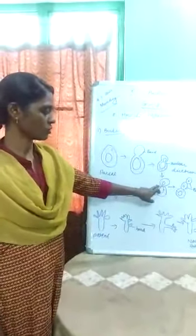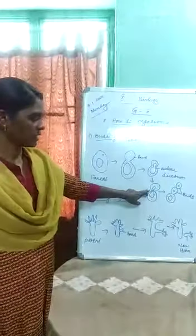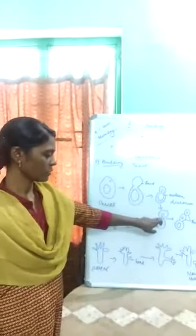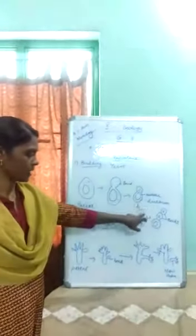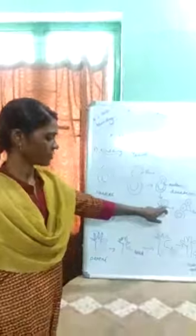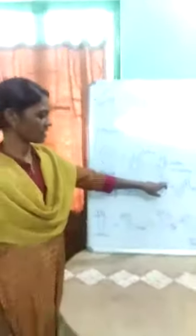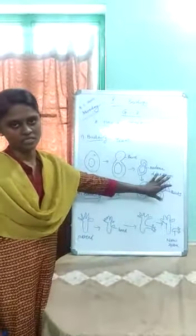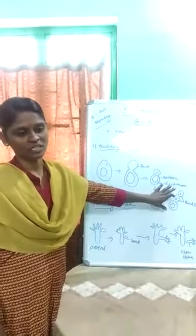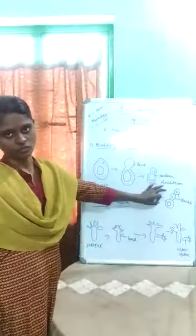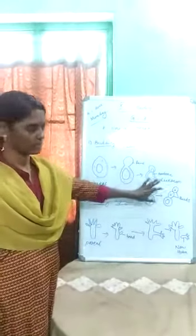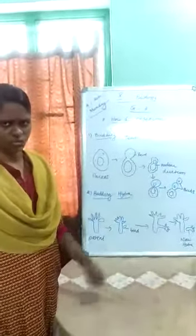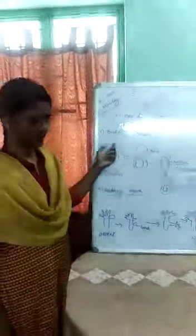This is followed by cytokinesis, where the cytoplasm also constricts and produces a new cell — the new bud. From the newly formed bud, another new bud can also be produced. So chains of buds are produced as each new bud matures. Chains of buds are produced in yeast, which is why it is selected as the best example for budding.